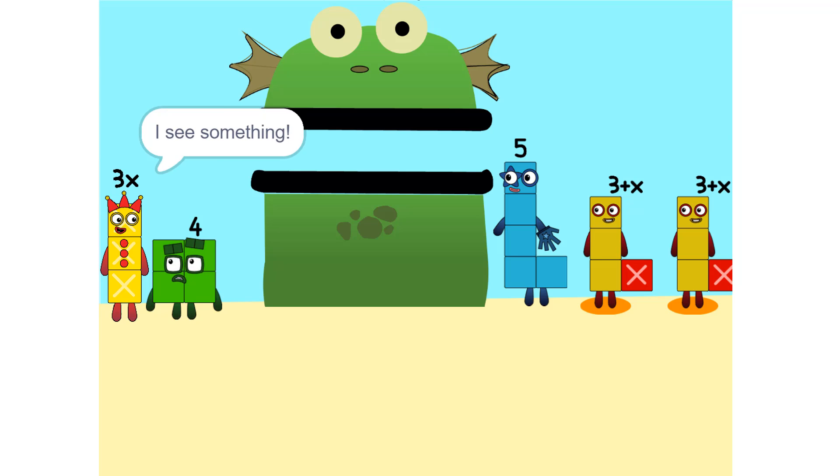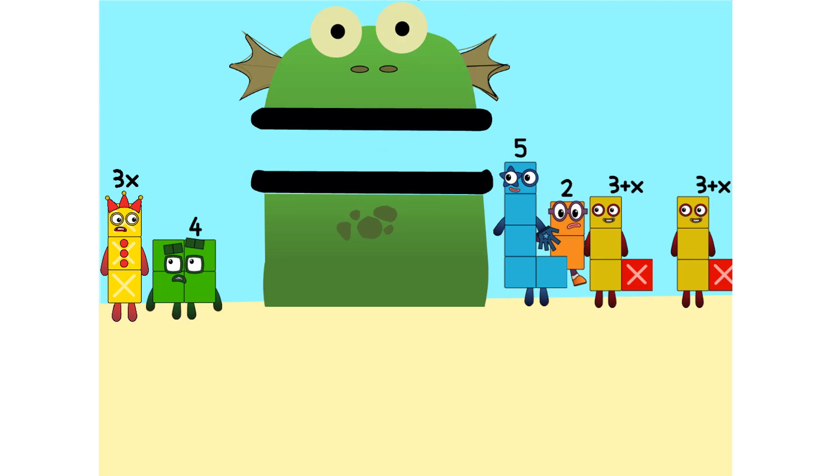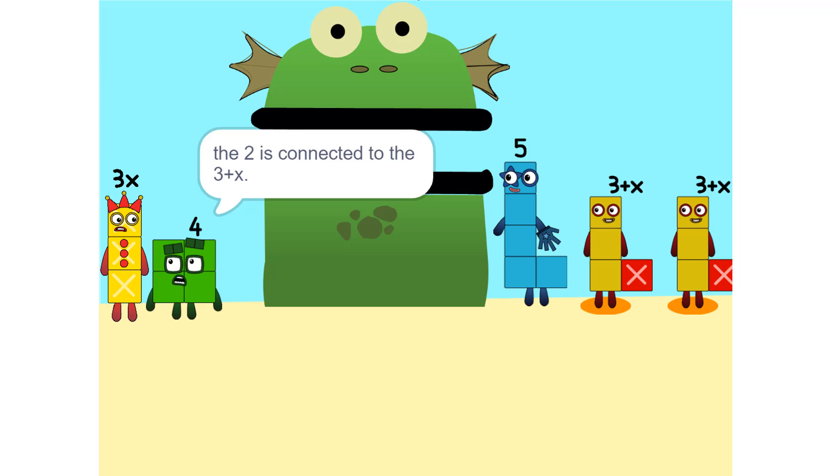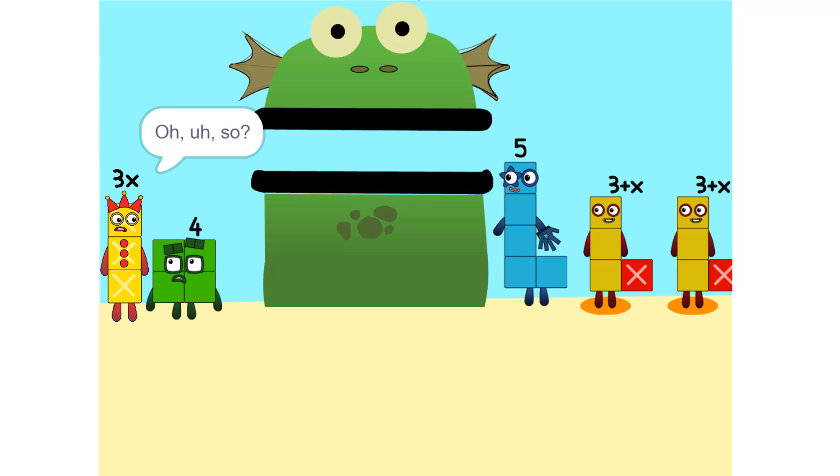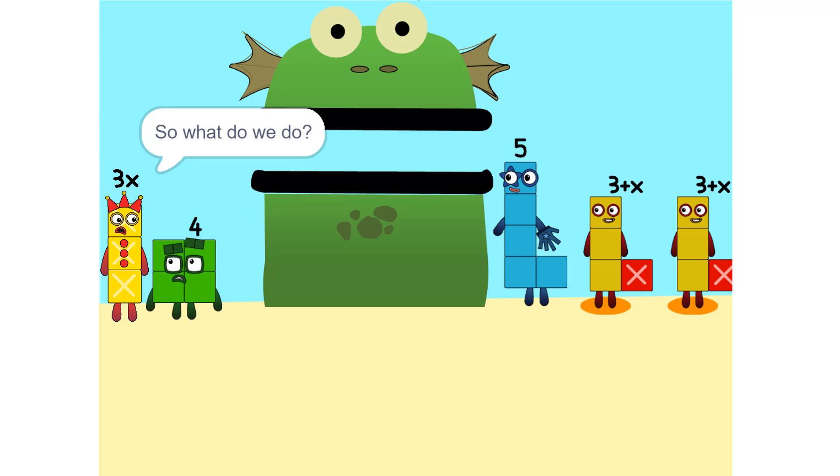I see something. We can add these. Why did that happen? Because the 2 is connected to the 3 plus x. Oh. So it's like adding apples and oranges. You can. So what do we do?